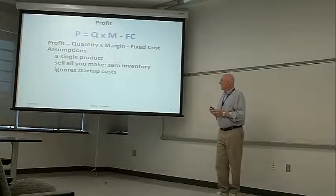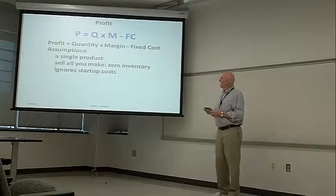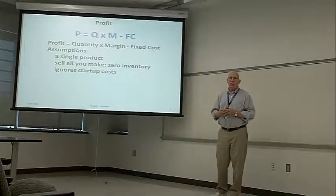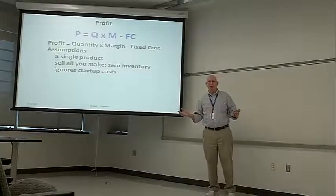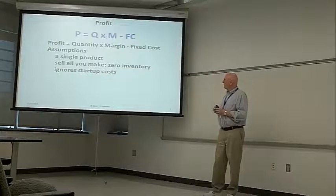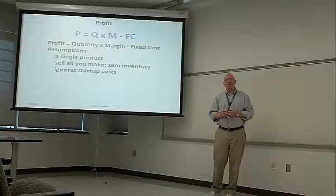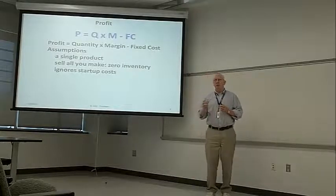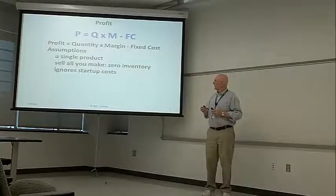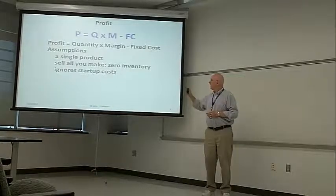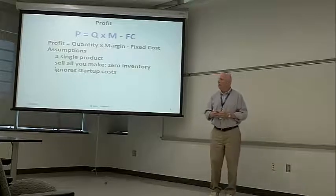Here's the profit formula: Profit equals quantity times margin minus fixed cost. Pretty simple — and it really is. It does make some assumptions. One is that we're talking about a single product; most companies make more than one product, so it's a bit unrealistic, but it's a starting point. We also assume that you sell all you make — nothing goes to inventory. Keep in mind this is looking at profit from a business standpoint, not an accounting standpoint. Accountants will shudder at some of this, but for business it's pretty good. It also ignores start-up costs, except that at the very end we will mention how to incorporate them.